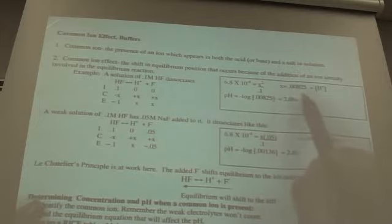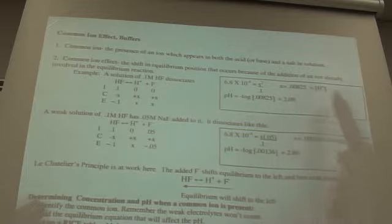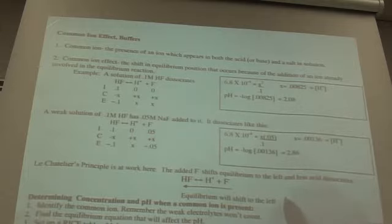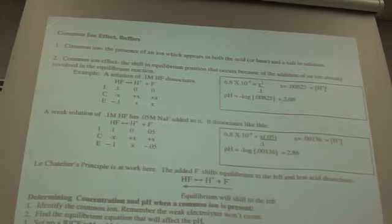In the first instance, without the common ion, we have hydrogen ion concentration of 0.00825 molar. When we introduced a common ion, the hydrogen ion concentration is 0.00136 molar, making the pH go up. It's nothing but Le Chatelier's principle happening.